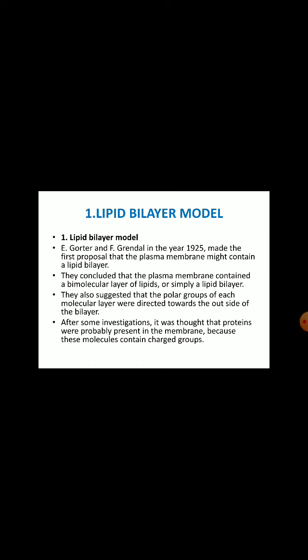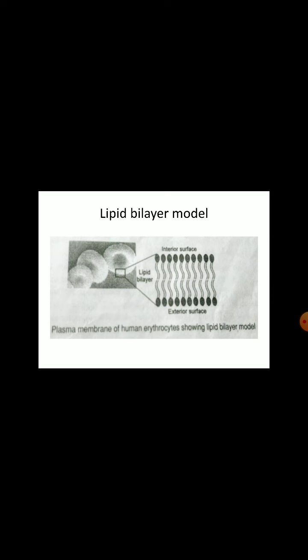After some investigations, it was thought that proteins were probably present in the membrane because these molecules contain charged groups. This diagram clearly shows the plasma membrane of human erythrocytes showing the lipid bilayer model. We can observe the two surfaces of the lipid bilayer — the interior surface and the exterior surface — clearly showing the lipid bilayer. That's why it is called the lipid bilayer model.